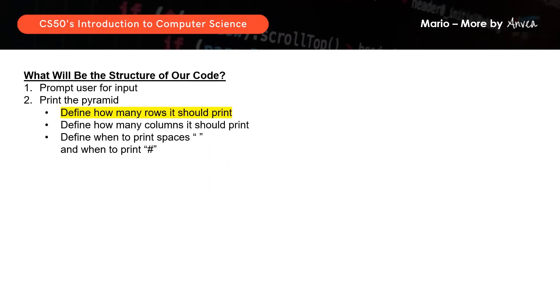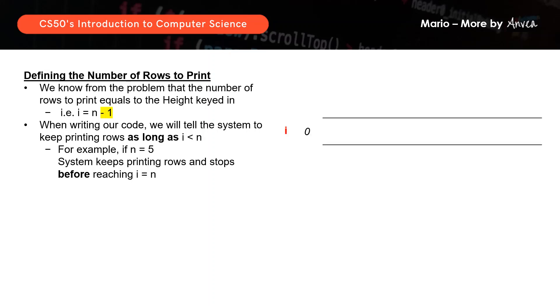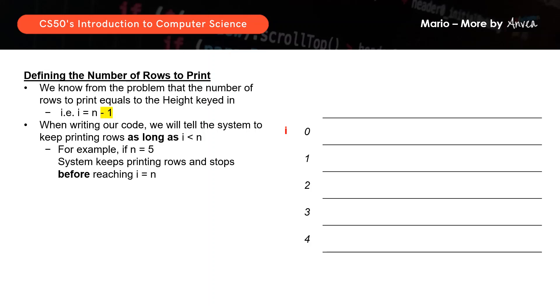Next, we need to define how many rows it should print. Based on what we saw earlier, we know that the number of rows to print equals to the height the user keys in. But remember in C, an array index starts with 0. So the number of rows to print — which is i — equals to N minus 1. When we write our code, we will tell the system to keep printing rows as long as i is less than N. For example, if the height is 5, the system should keep printing rows and stop before it reaches i equals to N. So you will print rows 1 through 5, and at row 5, i equals to 4 — the system keeps printing rows as long as i is less than N.